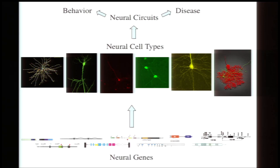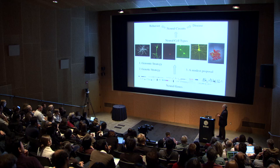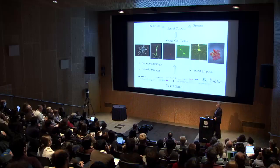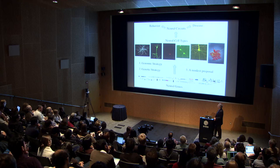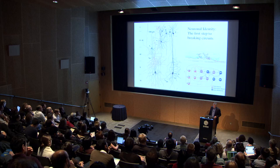By 'neurome,' I mean analogously to the term genome — which is the set of all genes — the set of all neuronal cell types. As we've heard, defining this set of cell types is a difficult problem. I want to tell you about a genomic strategy that bears similarity to what Nat Hines talked about this morning, a genetic strategy quite different from most of the strategies you've heard so far, and a modest proposal for a way forward.